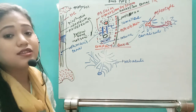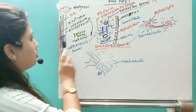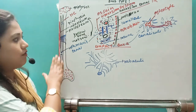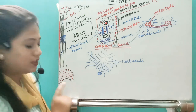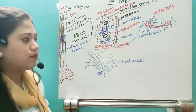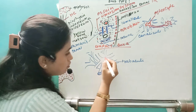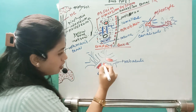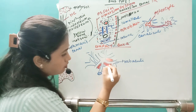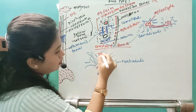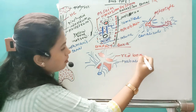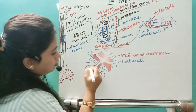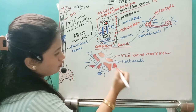Inside the trabeculae you will see lacunae within which osteocytes are present — everything is the same as in compact bone, just the bone matrix forms trabeculae in this case. The yellow bone marrow is found inside the cavity of the diaphysis. The red bone marrow, however, is found in between the spaces of the trabeculae in the spongy bone region.